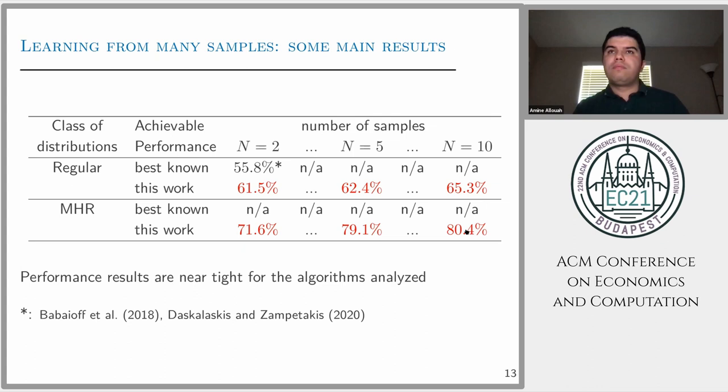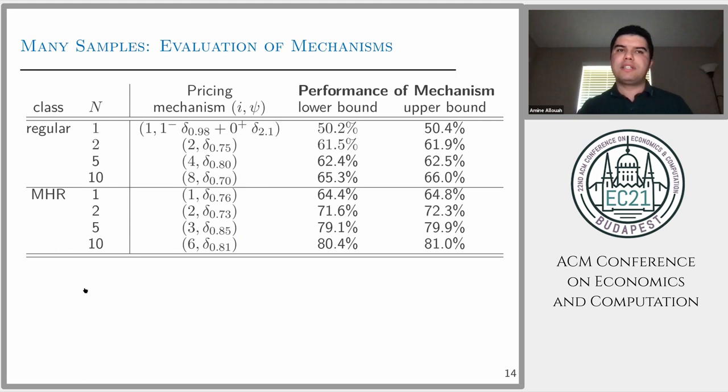In this work we show the first achievable performance for N equals 2, but also beyond that. Very interestingly, we show that already with 10 samples the seller can achieve 80% of the optimal performance. The mechanism that achieves this 80.4% is taking almost the median, the sixth highest value, and multiplying it by 81.81% and posting that as a price.